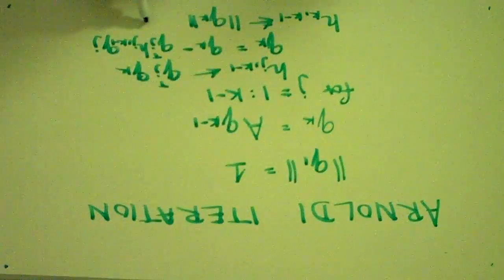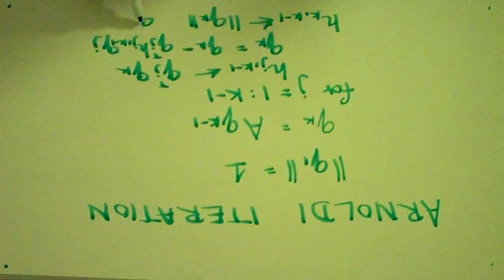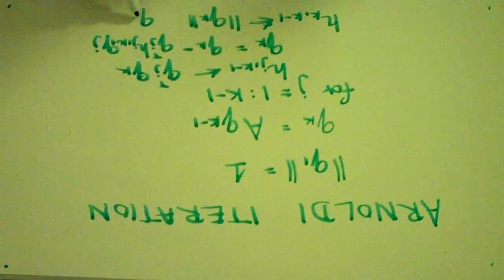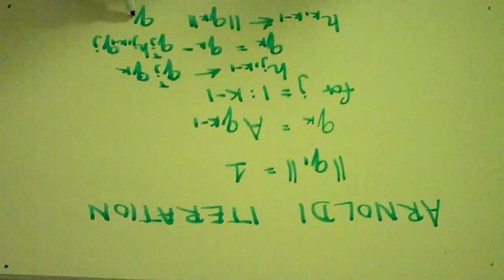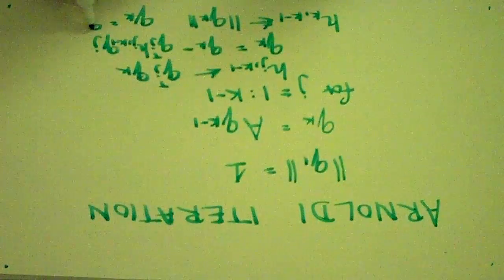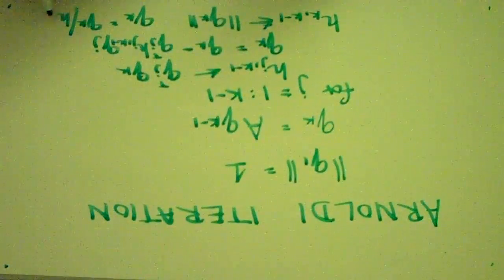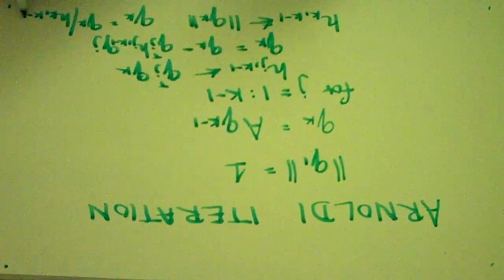And finally, we can scale QK to be normal by taking QK is equal to QK divided by the norm, H, K comma K minus 1.